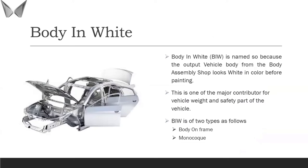Why do we call it 'Body in White'? There's no magic behind the term. Once a body is assembled in a car manufacturing area, it looks approximately white — or gray or silver in color. But technically, during the early days in the 60s and 70s when they started making the first cars, the color they saw was white, not gray or silver. So they named it 'Body in White.' The body also contributes to the major weight and major safety of the entire vehicle.